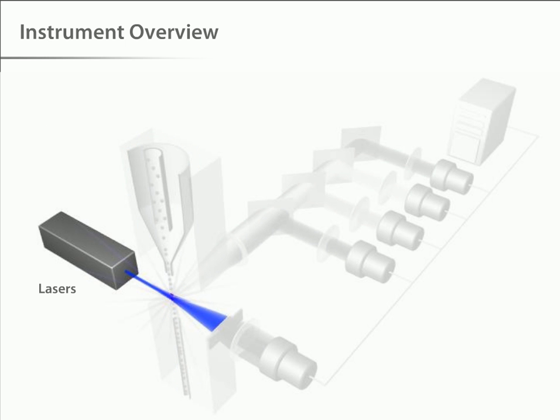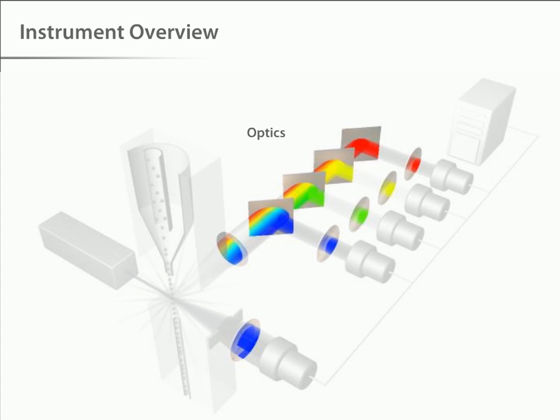the lasers, which are the light source for scatter and fluorescence, the optics, which gather and direct the light,